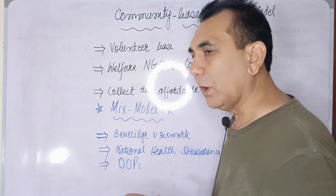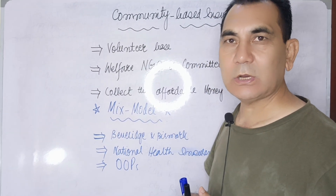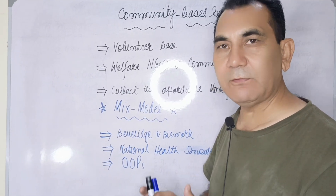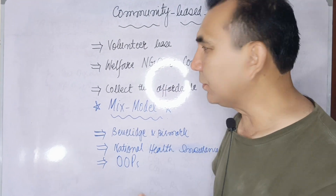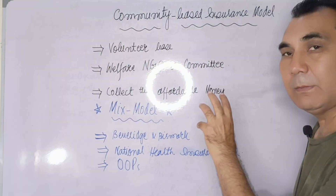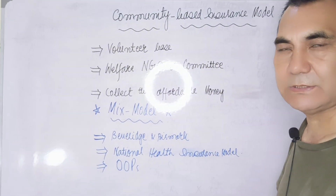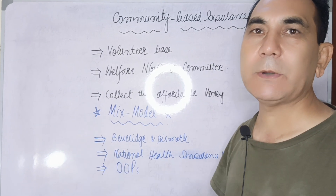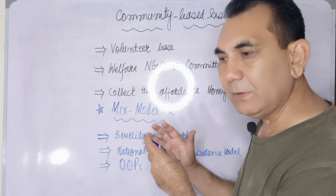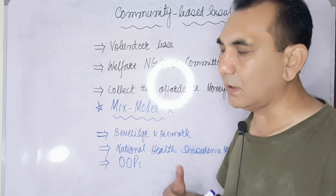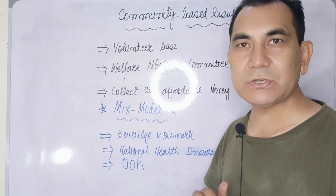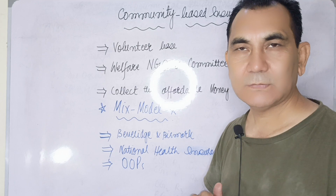Under this model, people in the community voluntarily participate in a community-based health insurance scheme. They formulate a welfare committee or welfare NGOs that collect affordable money on a monthly or annual basis from every individual in that community, based on their income. When a community member becomes sick, diseased, or gets an injury, the committee or welfare NGO will cover the expenditure on behalf of that individual.